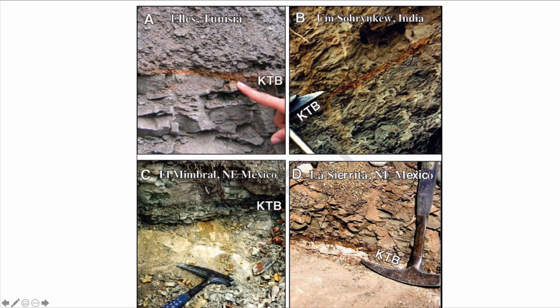Let's start with that reddish, iridium-rich layer. You can see it here at El Kef in Tunisia at point A — that's the KTB or Cretaceous-Tertiary Boundary in red. You can also see it very clearly in India in photo B, and even in New Mexico where the reddish layer is less visible in photo C, and again in photo D. This red layer is apparently a very good marker because we can find it around the globe. We know how it formed — through an impact by a meteorite — and the fact that it contains so much iridium is itself an indication of extraterrestrial contribution.